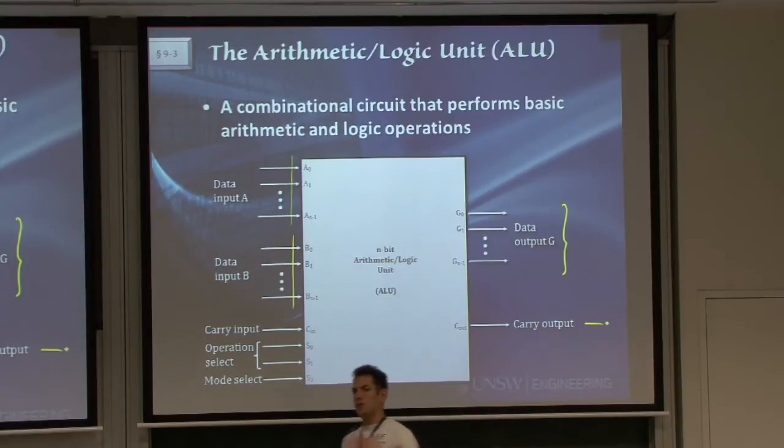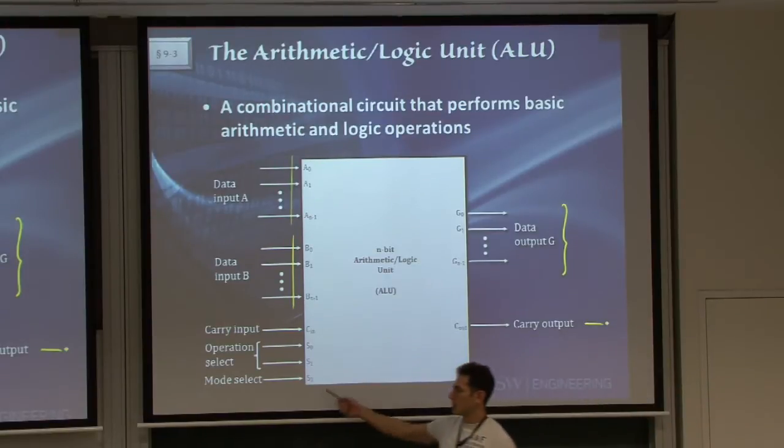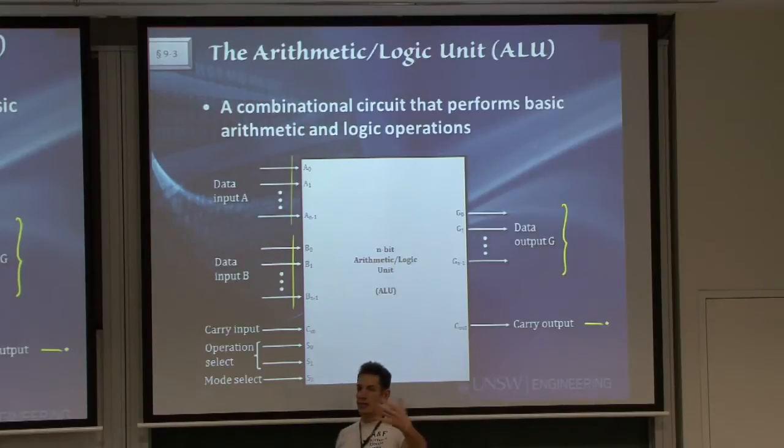We will choose this using the signal S2. Each one of those arithmetic or logic can have four different operations selected by S0 and S1. For example, I might have a combination for plus, for addition, another combination to do subtraction. If it was the logic unit, I might choose to do an and operation or an OR operation.